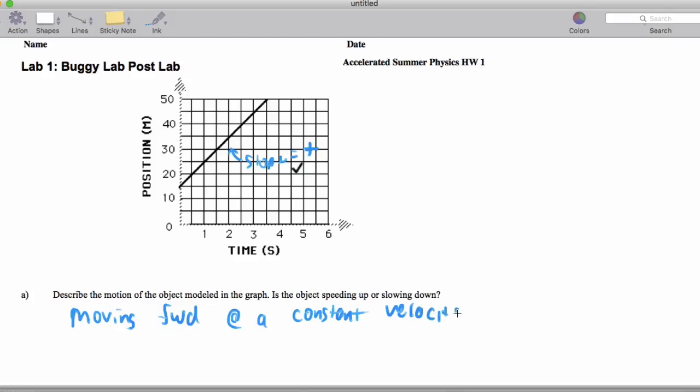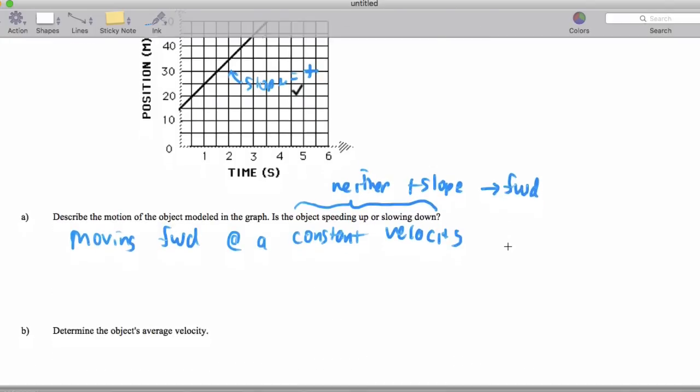So of course I do the natural thing of throwing in a trick question here. It says, is it speeding up or slowing down? The answer is neither. The positive slope means it's going forward. So of course I'm going to try to trick you like that here and on tests.